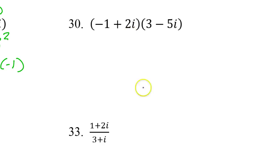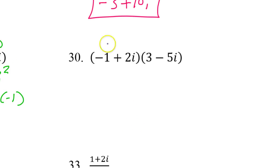Quote, unquote. All right? Number 30. We definitely have to do a double distributive property here. All right? So I'm going to distribute that. So that's going to make negative 3 plus 5i. And then I'm going to distribute the 2i. So that's going to make positive 6i minus 10i squared. There's that i squared again.